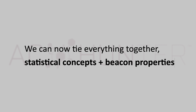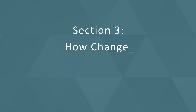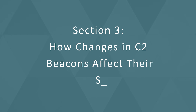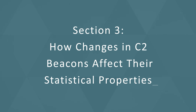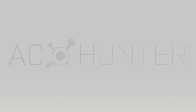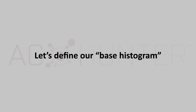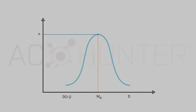We've now reached the point where we can tie everything together — the statistical concepts we learned at the start with the various properties of beacons we just discussed. The coming sections will explore how variations in beacon properties affect the various statistical properties. Now, let's first define our base histogram.